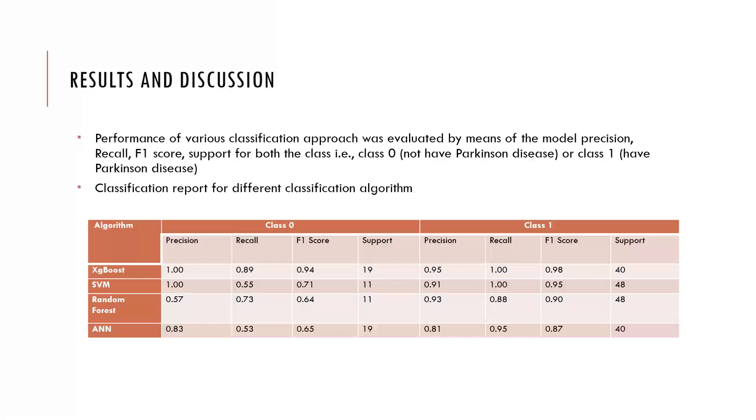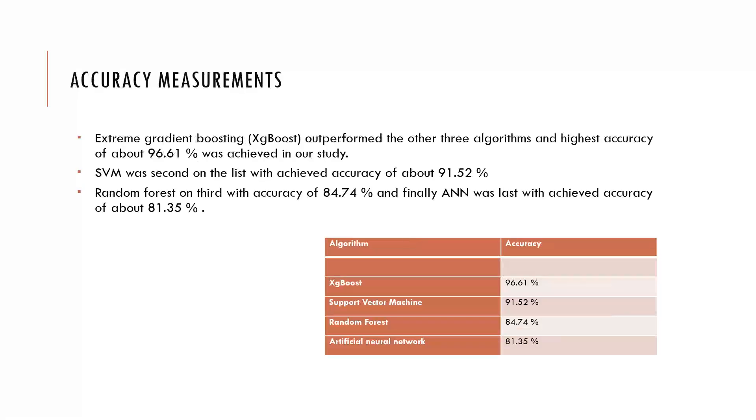Using these performance criteria, we have evaluated all the models. Here is the classification report for different classification algorithms. In our study, extreme gradient boosting XGBoost outperforms all the other three algorithms, achieving the highest accuracy of about 96.61 percent. SVM was second on our list with average accuracy of about 91.52 percent. Random Forest on the third with 84.74 accuracy, and finally ANN at the last with 81.35 accuracy.